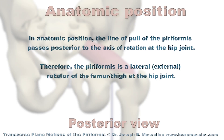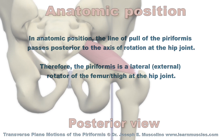In anatomic position, the line of pull of the piriformis passes posterior to the axis of rotation at the hip joint. Therefore, the piriformis is a lateral, external rotator of the femur or thigh at the hip joint.